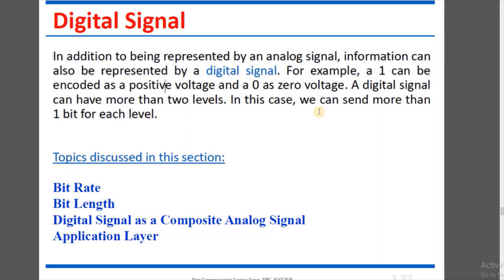When we have 0 and 1, we have to decide the signal level. The signal level depends on how we send data. If we send data 1 bit at a time, we have one level for 0 and one level for 1. If we send 2 bits at a time, the combinations can be: 00, 01, 10, 11.